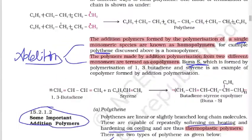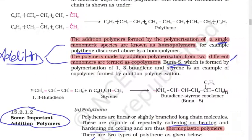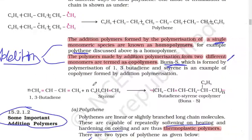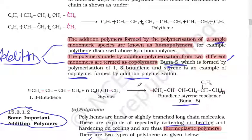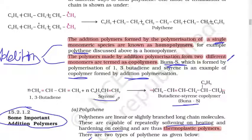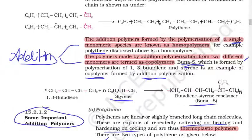Now, the copolymer example: Buna-S. In addition polymerization, Buna-S is a copolymer. It is formed from two monomers: 1,3-butadiene and styrene.